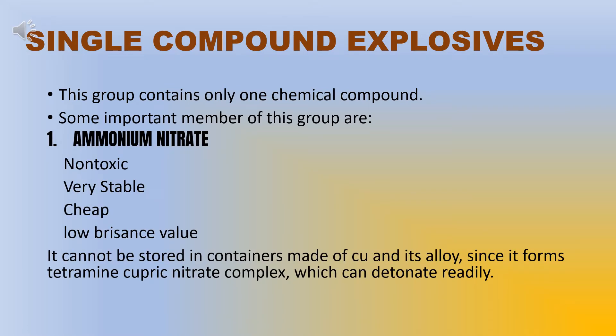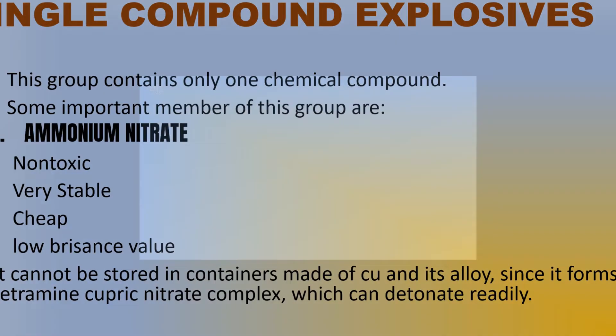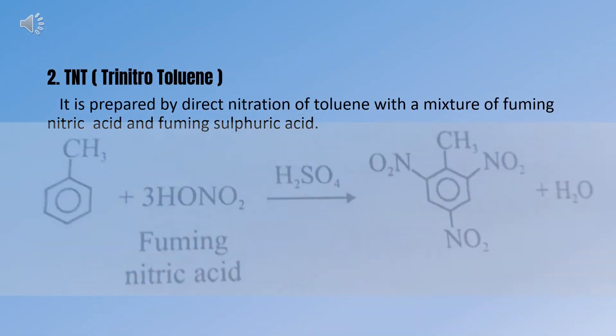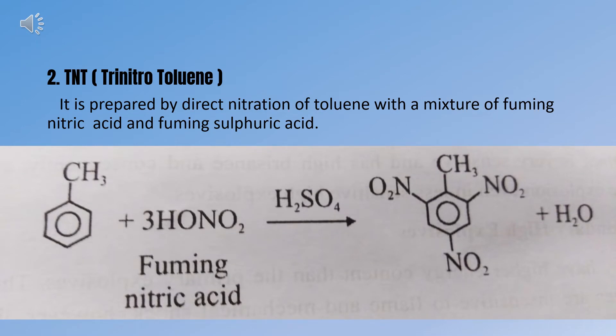Single compound explosive: this group contains only one chemical compound. Some important members of this group are ammonium nitrate. They are non-toxic, very stable, cheap and have low brisance value. It cannot be stored in containers made of copper and its alloys since it forms a tetramine cupric nitrate complex which can detonate readily. TNT, or trinitrotoluene, is prepared by direct nitration of toluene with a mixture of fuming nitric acid and fuming sulfuric acid.